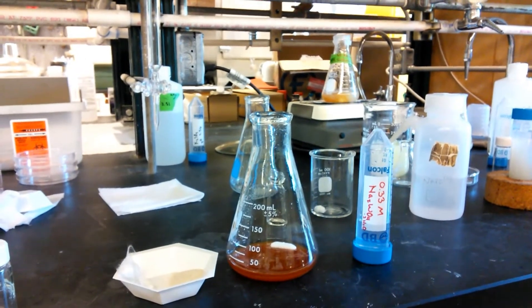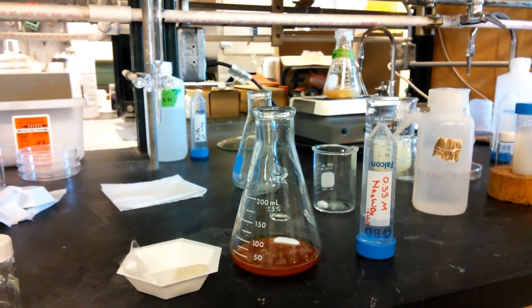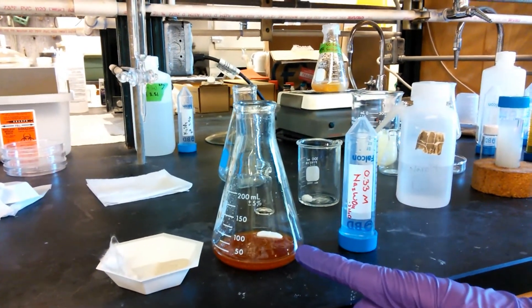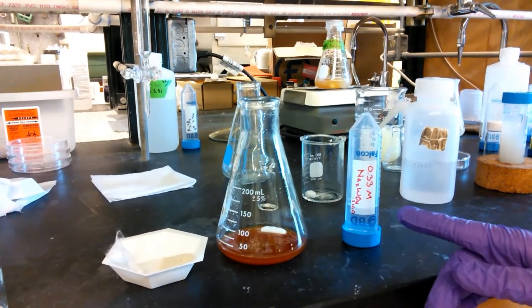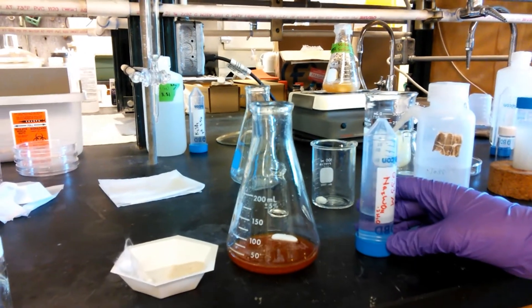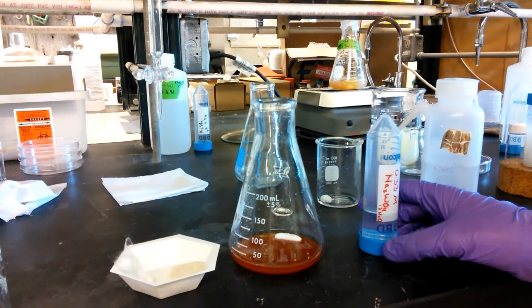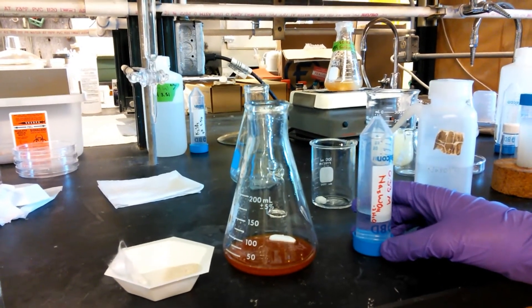Here are the major components of the cation exchange column we'll be using. This is glass wool, this is sand, this is a proton exchange resin, and this is my sodium tungstate which I will be using to convert into tungsten oxide in this approximately 0.33 molar solution.